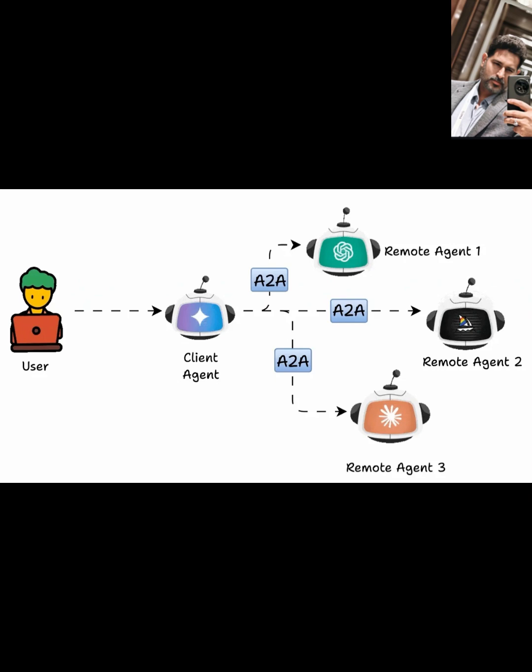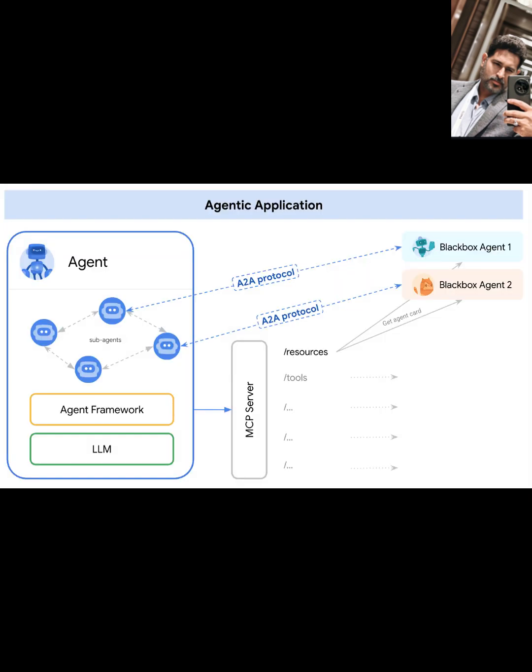SSE was chosen over WebSockets for its unidirectionality and firewall-friendliness. The interaction flow follows a clear sequence: it starts with discovery, where the client agent fetches the remote agent's agent card to understand its capabilities. During initiation, the client generates a task ID and sends an initial message using either task/send for quick synchronous tasks, or task/sendsubscribe for long-running tasks with streaming updates.